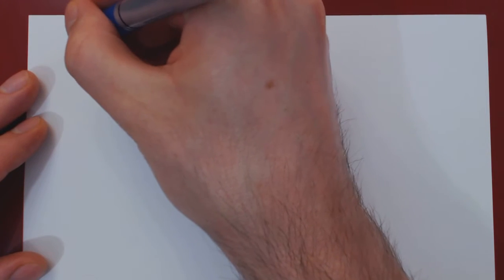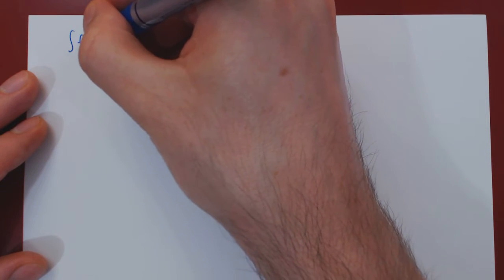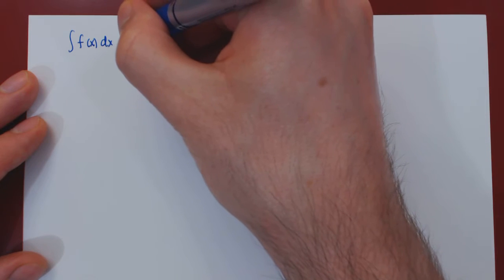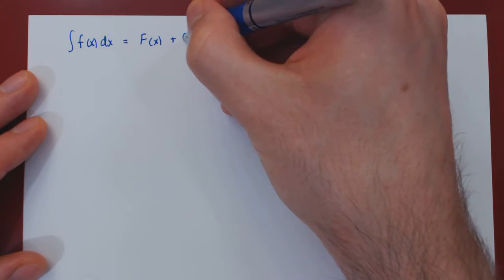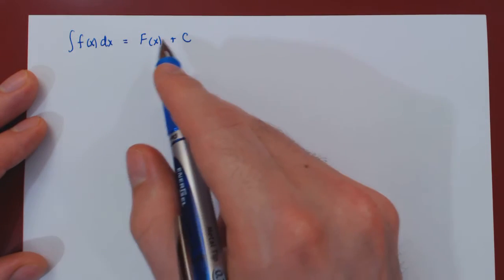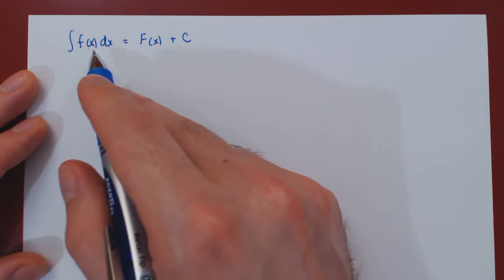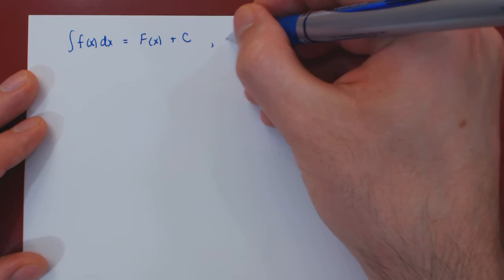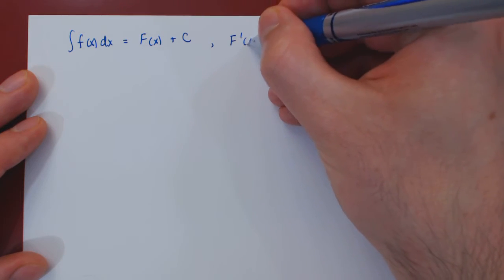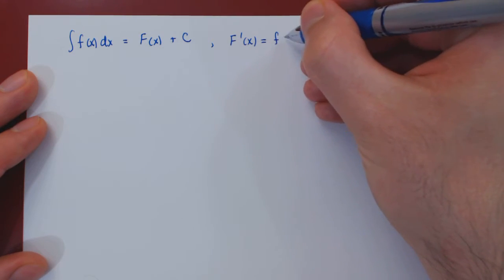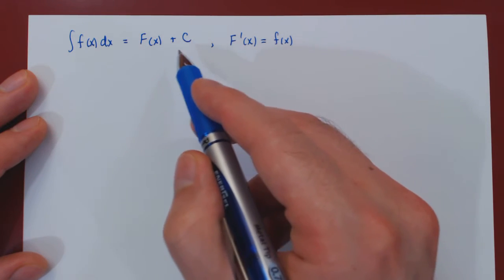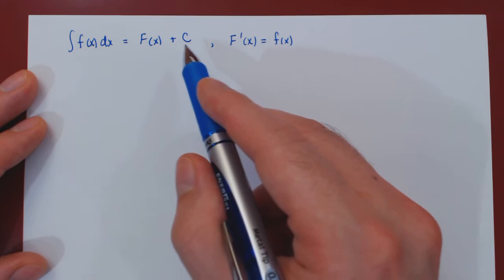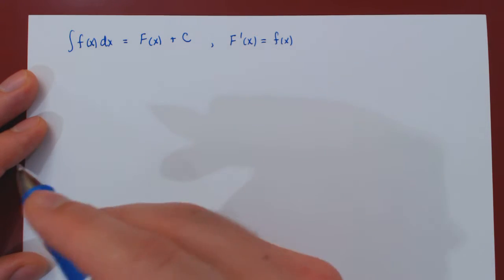So if you recall, we can look first at the indefinite integral of lowercase f. Again, when we talk about the indefinite integral, we talk about all antiderivatives to lowercase f. So the derivative of uppercase F must be lowercase f of x. And as antiderivatives are unique up to the addition of a constant, we have here all antiderivatives to lowercase f.